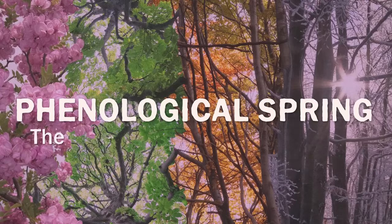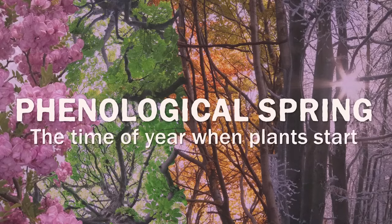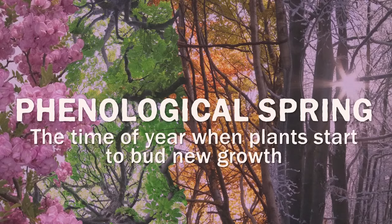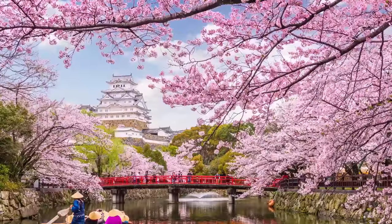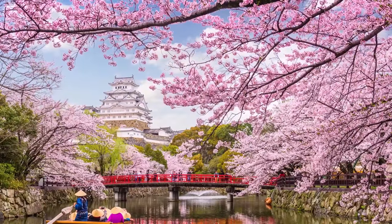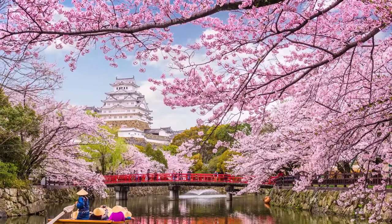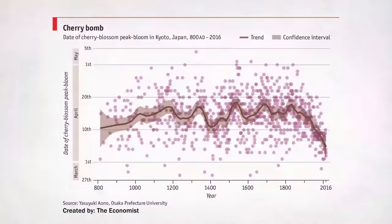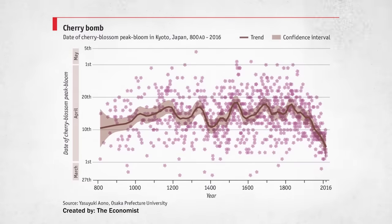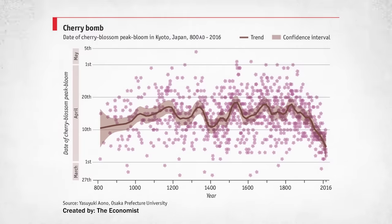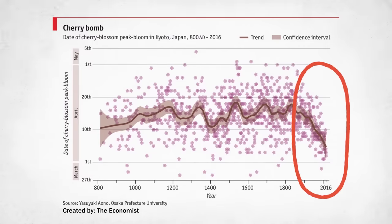Climate change is also messing with the seasons. Phenological spring — the time of year when plants start to bud new growth — has occurred earlier in response to a warming planet. For instance, researchers have tracked the date cherry trees blossom in Japan based on centuries of diary entries and chronicles. After 1,200 years of a nice steady cycle, the peak for cherry blossoms in Japan has been getting earlier and earlier, thanks to climate change.